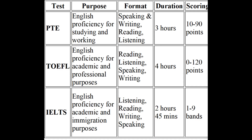Segment 1: Overview of English Proficiency Tests. PTE — Pearson Test of English. Purpose: English proficiency test for studying and working abroad. Format sections: Speaking and Writing, Reading, and Listening. Duration: approximately 3 hours. Scoring: 10–90 points, with separate scores for each section and an overall score.